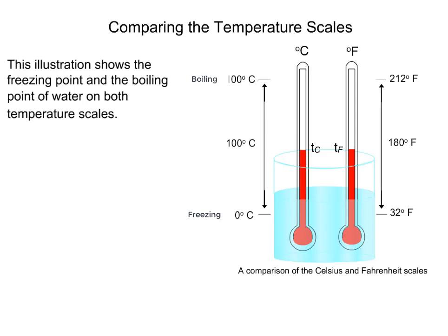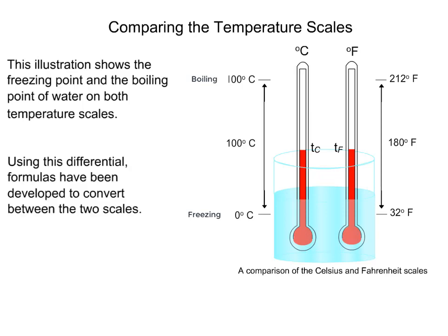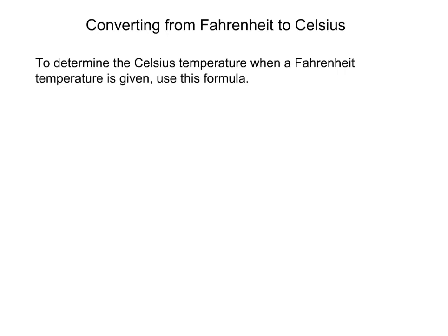This illustration shows the freezing point and the boiling point of water on both temperature scales. Using this differential, formulas have been developed to convert between the two scales. To determine the Celsius temperature when a Fahrenheit temperature is given, use this formula.